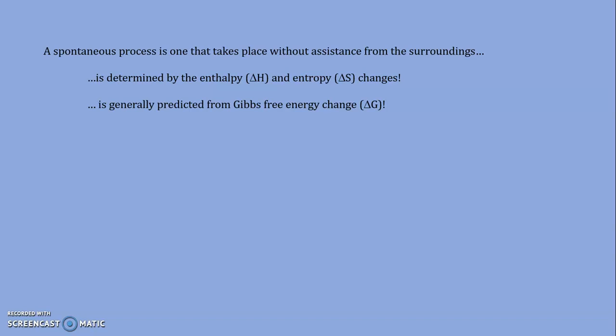Where, of course, as chemists, we would find ourselves predicting that spontaneity with the use of Gibbs free energy change, delta G. Where delta G, our free energy change, is calculated from the enthalpy and entropy changes, using the equation which appears on the screen now.